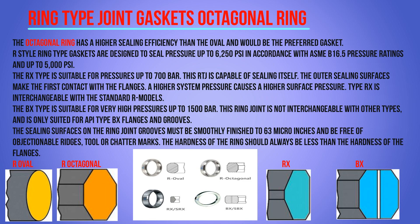The RX type is suitable for pressures up to 700 bars. This RTJ type is self-energizing — outer sealing surfaces make first contact with the flange, and higher system pressure causes higher surface pressure. The RX type is interchangeable with the standard R model. The BX type is suitable for very high pressure up to 1500 bars; this ring joint is not interchangeable with other types and is only suited for API type BX flanges and grooves.